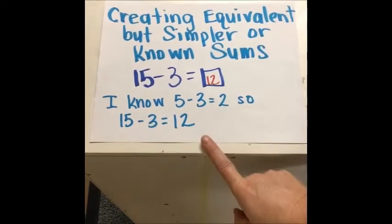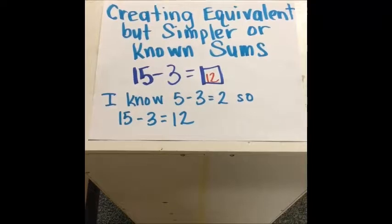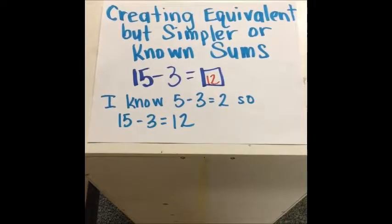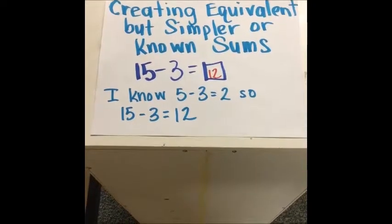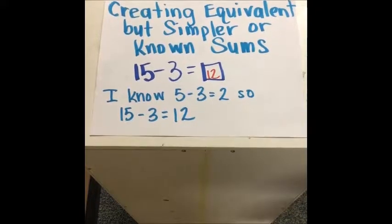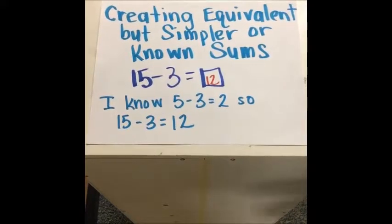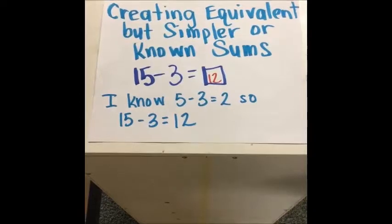Another way they could use this strategy is for a doubles or near doubles fact. If the problem was 8 plus 7 equals something, they could say, 'Well, I know 7 plus 7 equals 14, so 8 plus 7 equals 15.'